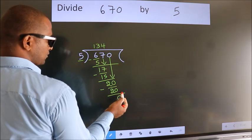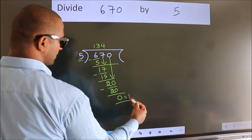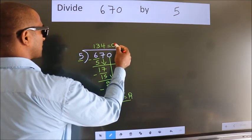No more numbers to bring it down. So we stop here. This is our remainder. This is our quotient.